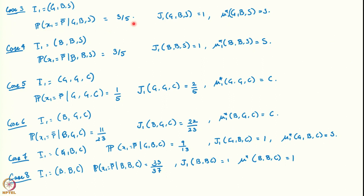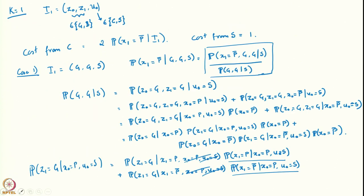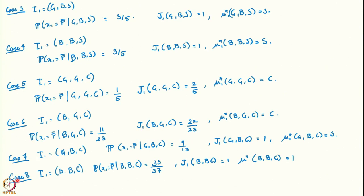What you observe in cases 3 and 4 is that the probability the machine is broken — when I1 is GBS or BBS — is 3/5. This is multiplied by the cost of 2, giving the cost from continuing as 2 times 3/5 equals 6/5. That is greater than the cost from stopping, which is 1. Comparing 6/5 with 1, the optimal action is to stop, and this applies in both of these cases.